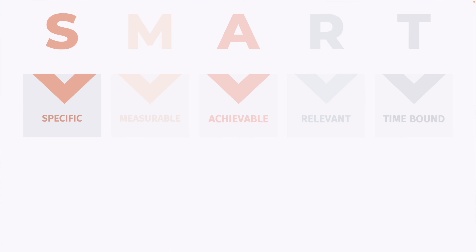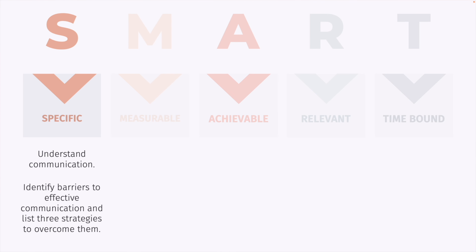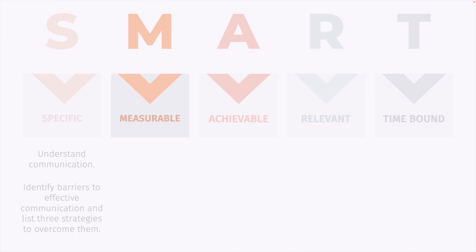Your objectives should be precise. Instead of 'understand communication,' it should be 'identify barriers to effective communication and list three strategies to overcome them.' You should also be able to measure the success of each objective, which often means using verbs that are quantifiable like list, demonstrate, or calculate.